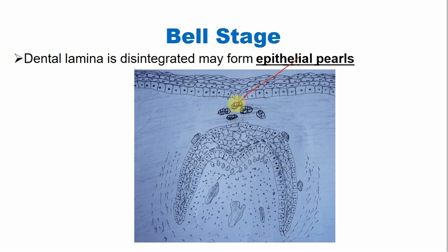These epithelial pearls may form extra teeth, which we call supernumerary teeth. Because they have an epithelial component and connective tissue surrounding this epithelium, they may form cysts or they may form a tooth-like structure — tooth-like tissues that we call odontomes. These structures need a profuse blood and nerve supply.